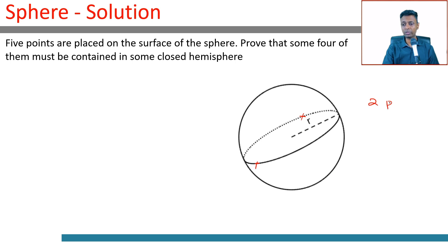We accounted for two points. Now comes the beauty of this proof: there are three points remaining under two hemispheres.